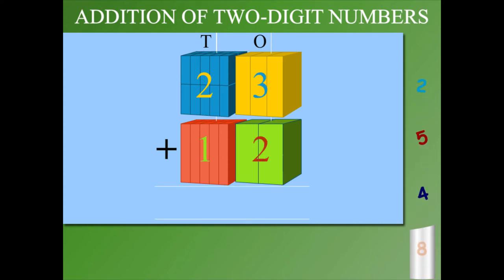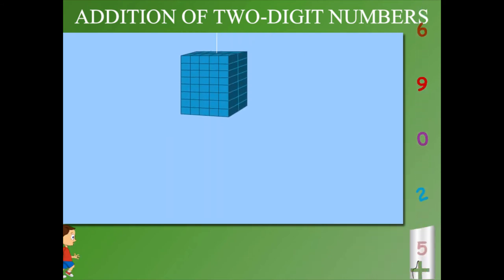Add the ones, 3 plus 2 is 5. And two tens plus one tens is three tens, making it 35. Look at this one.